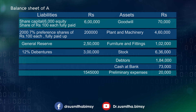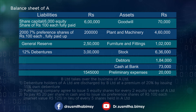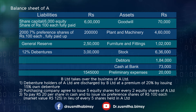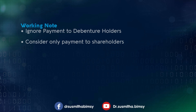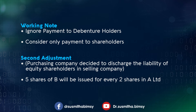The additional information is given here. B Limited takes over the business of A Limited. The first adjustment states that debenture holders of A Limited are discharged by B Limited at a premium of 20% by issuing 15% debentures. Ignore this information, because according to the net payment method, only the payment made to shareholders needs to be considered. Debentures are issued to debenture holders, not to shareholders, so ignore this adjustment.